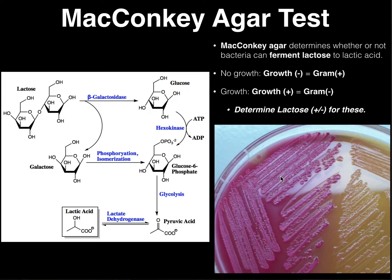MacConkey agar inhibits the growth of gram-positive organisms — they don't grow on this. The reason behind this, as you'll see in your lab manual, there are substances embedded in the agar itself called bile salts along with crystal violet. Both of these substances collectively act to inhibit the growth of gram-positive organisms. So if you plated a gram-positive organism on here, you wouldn't see any colonies growing — you won't see any growth if it's gram-positive. That's how this agar is selective.